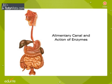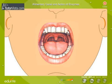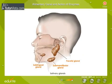The alimentary canal and action of enzymes: our digestive system consists of the alimentary canal and associated glands. The process of digestion starts in the mouth, where food is chewed with the help of our teeth. The digestive juice saliva mixes with the food. Saliva is secreted by the salivary glands and contains an enzyme ptyalin.